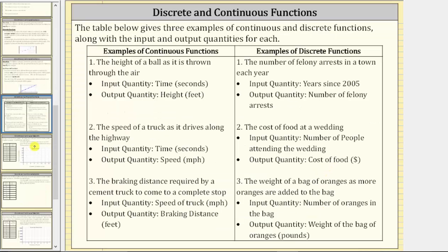Now let's look at some examples of continuous and discrete functions. The table below gives three examples of each, along with the input and output quantities. For continuous functions: number one, the height of a ball as it is thrown through the air, where the input is time in seconds and the output is height in feet; number two, the speed of a truck along the highway, where the input is time in seconds and the output is speed in miles per hour; and number three, the braking distance required by a cement truck to stop, where the input is speed in miles per hour and the output is braking distance in feet. For these three functions, the inputs can take on any value over a given interval and all points on the graphs would be connected.